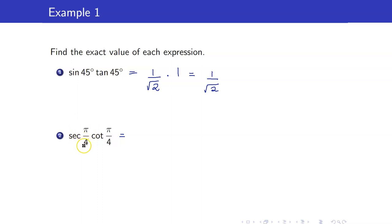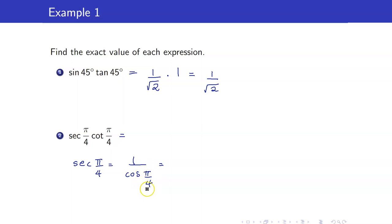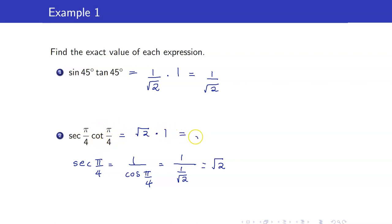Next, secant of pi over 4. Secant of pi over 4 is just the reciprocal of cosine. Cosine of pi over 4 — pi over 4 is 45 degrees — is 1 over square root of 2, so its reciprocal is 1 over (1 over square root of 2), which equals square root of 2. Times cotangent of pi over 4, which we know equals 1. So this is equal to square root of 2.